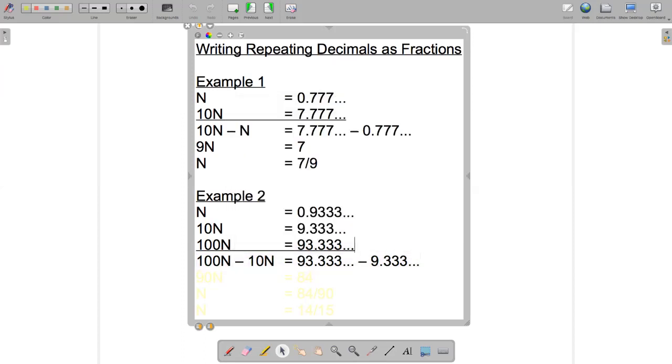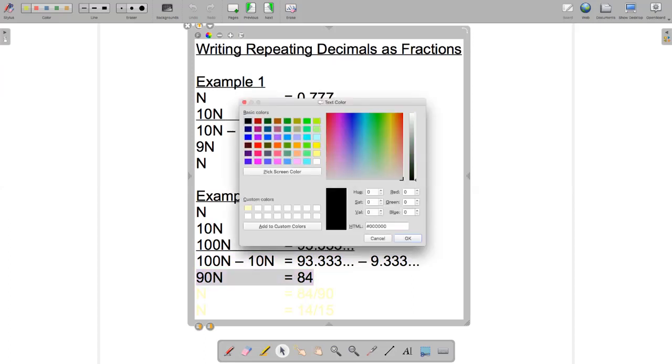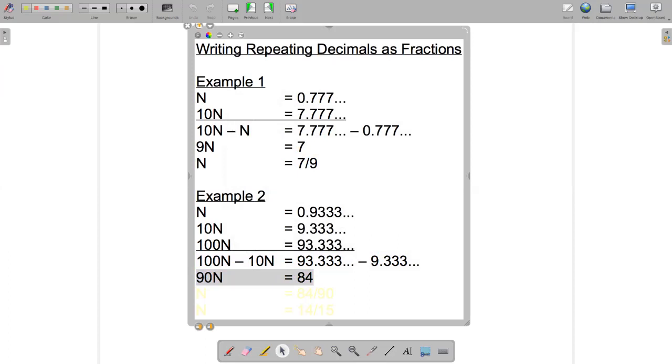and sure enough if I calculate that out I'm going to have 90n left on the left hand side and 84 left on the right hand side. So now I've got whole numbers I can do my division to find out what n is. n is 84 over 90.